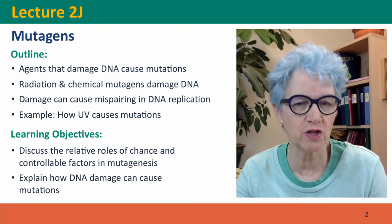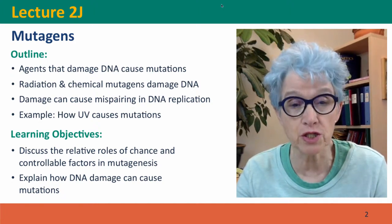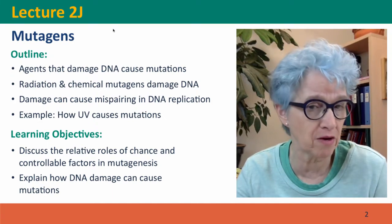Hi everyone. Welcome back to Useful Genetics. This is lecture 2J where we're going to talk about mutagens, agents that increase the frequency of mutation above the background rate.